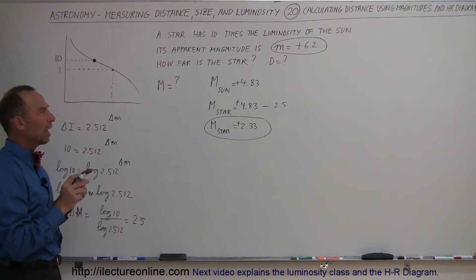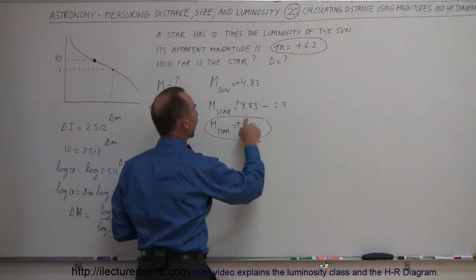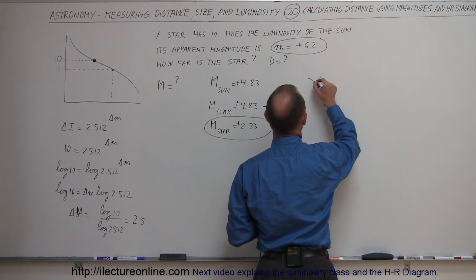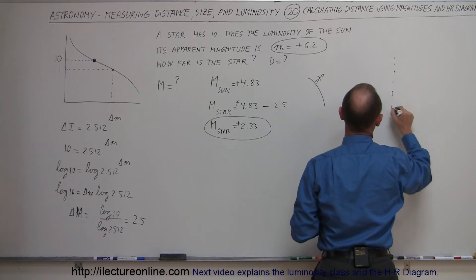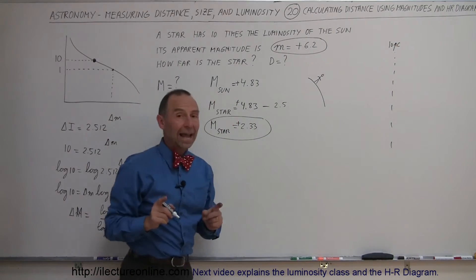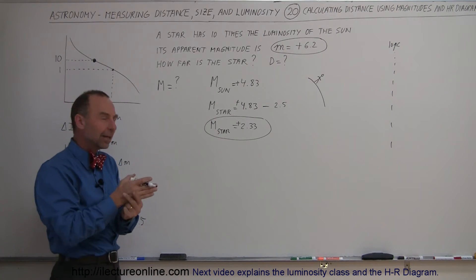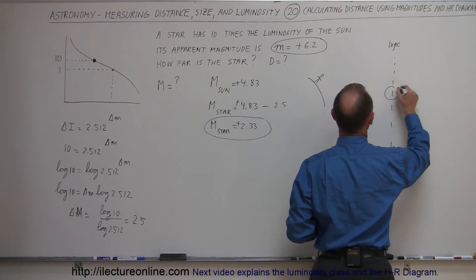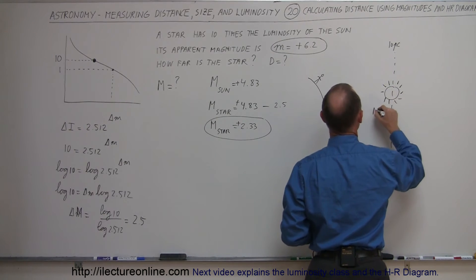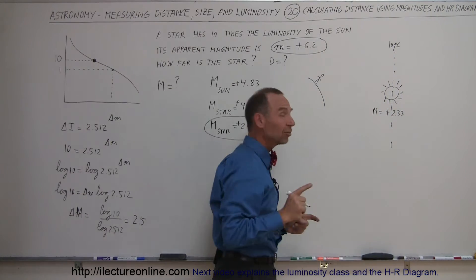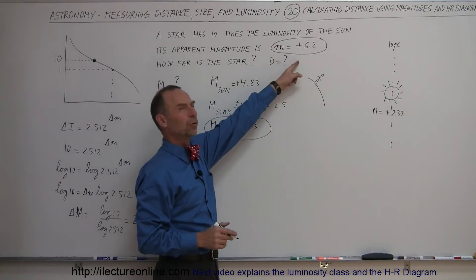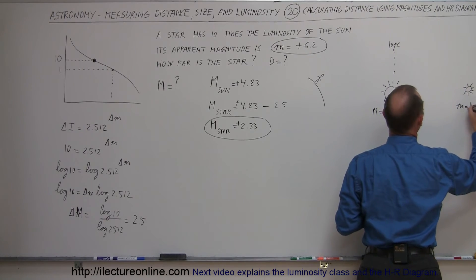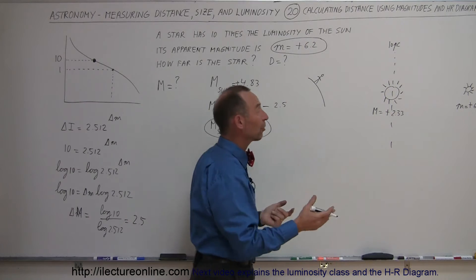Now we know both the apparent and absolute magnitudes, so we're ready to find the distance. Let's picture what's going on: we're observing the star from the Earth. At 10 parsecs, the apparent and absolute magnitudes would be the same, so if we place the star at 10 parsecs it would appear as a +2.33 magnitude star. But it actually appears to us at magnitude 6.2, which is dimmer, so it must be farther away.